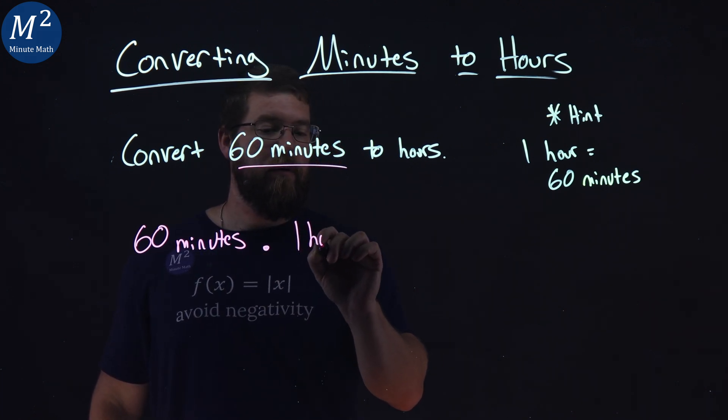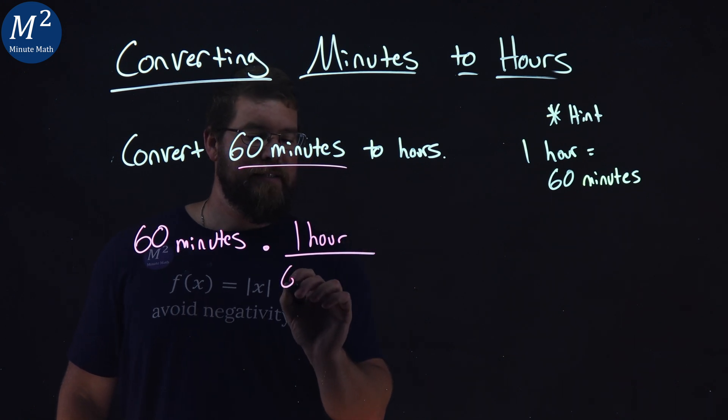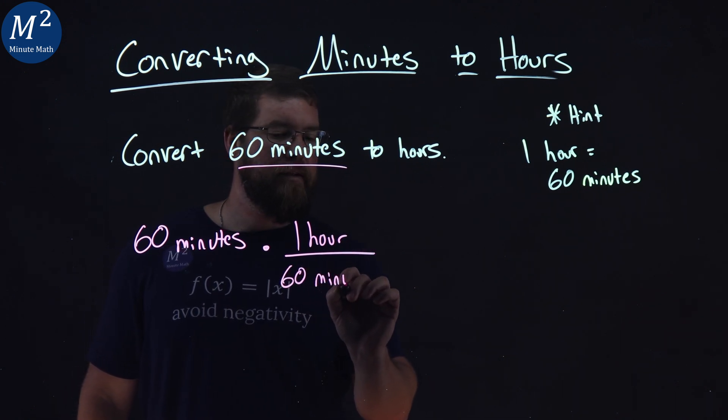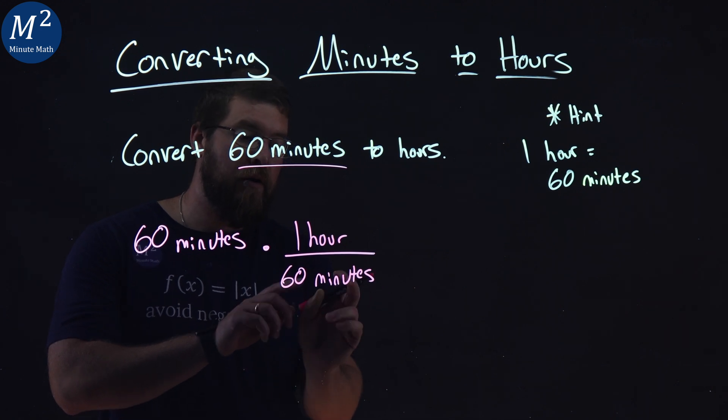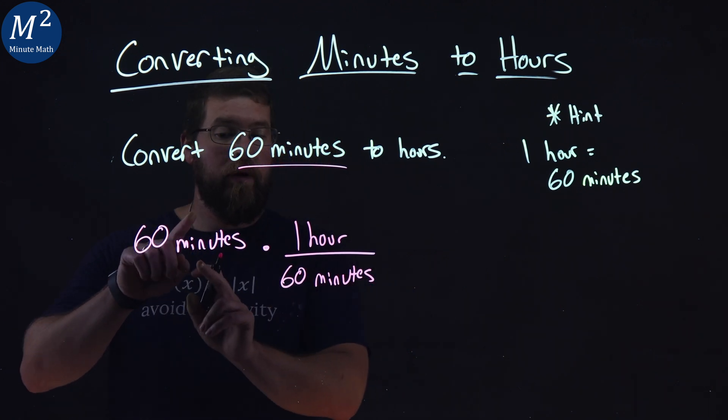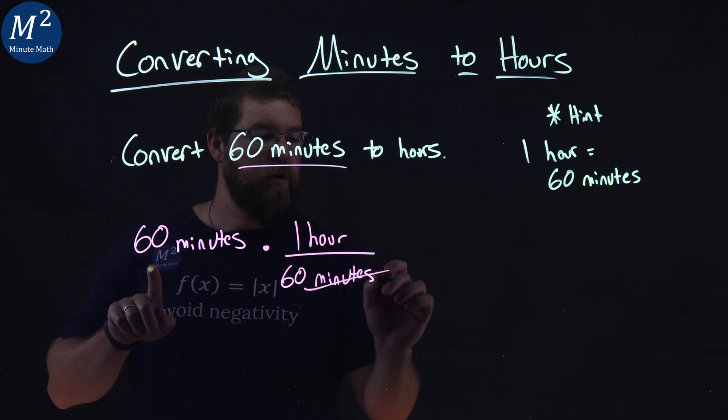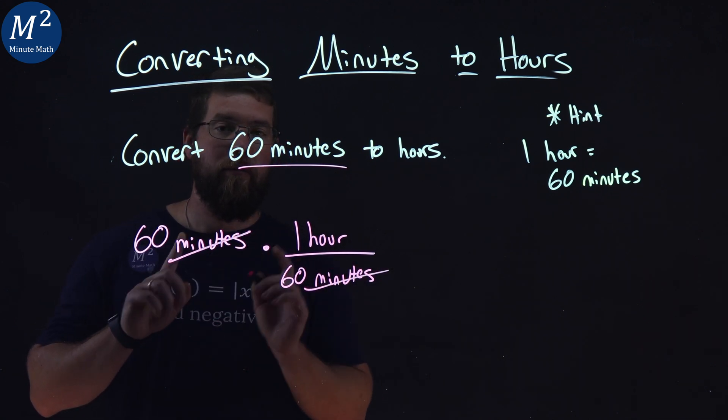So I'll write one hour over 60 minutes. I put the minutes in the denominator, knowing that the units will cancel out with the minutes in the numerator. The units cancel right there.